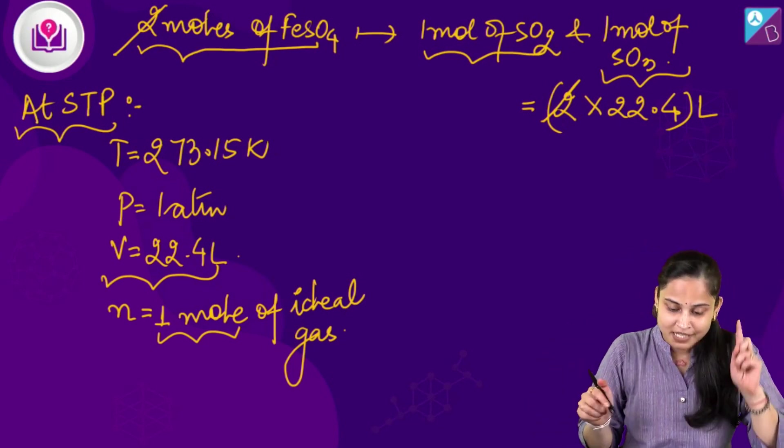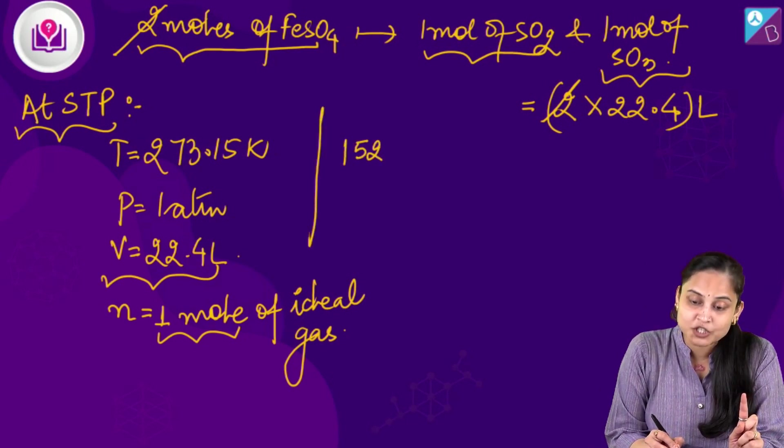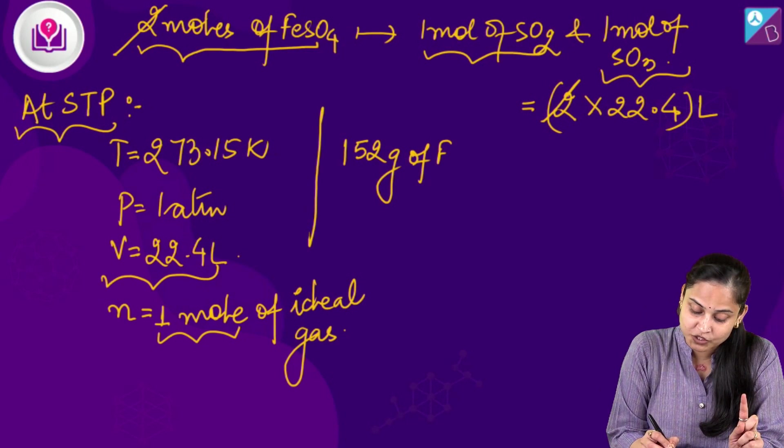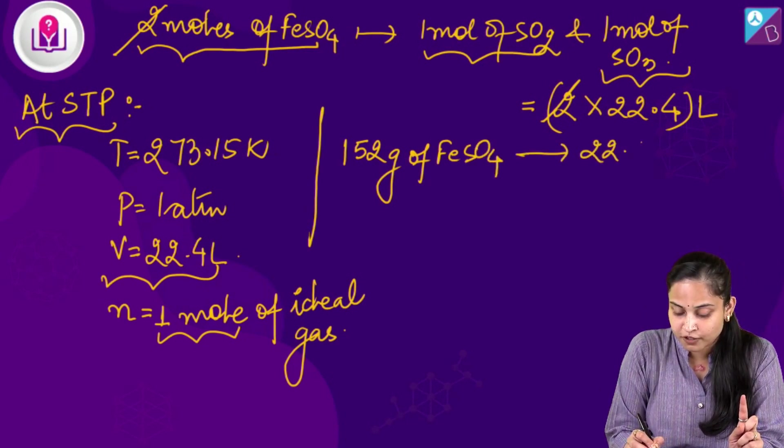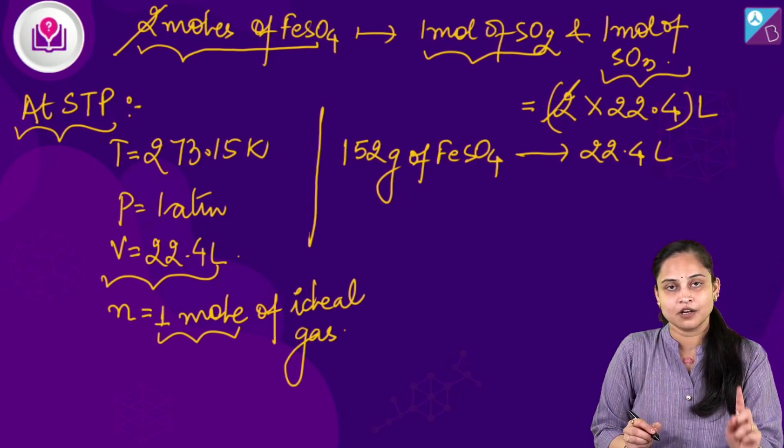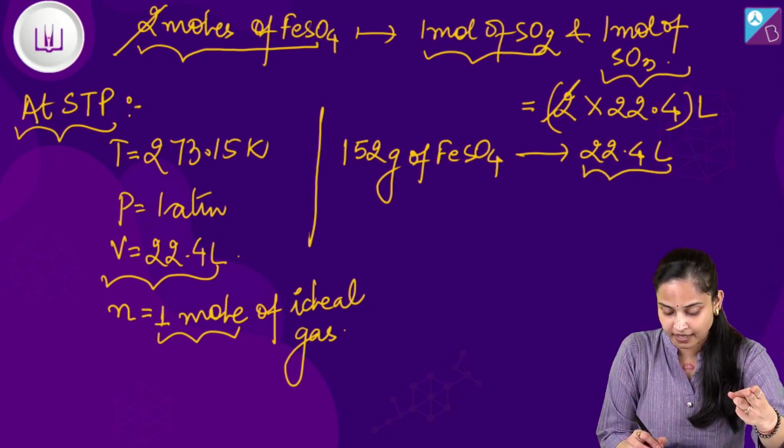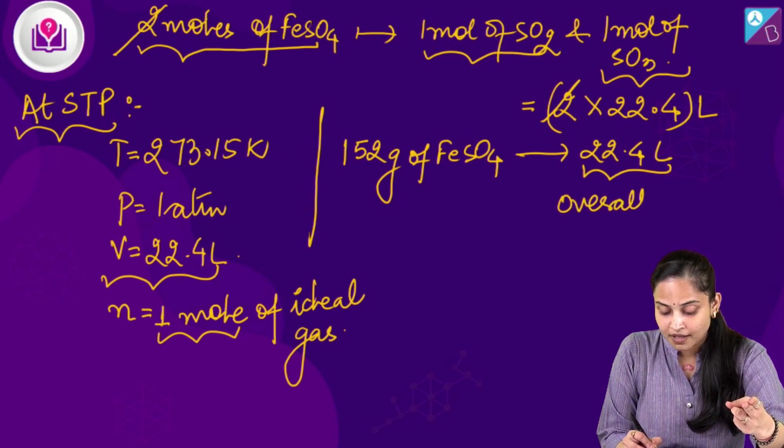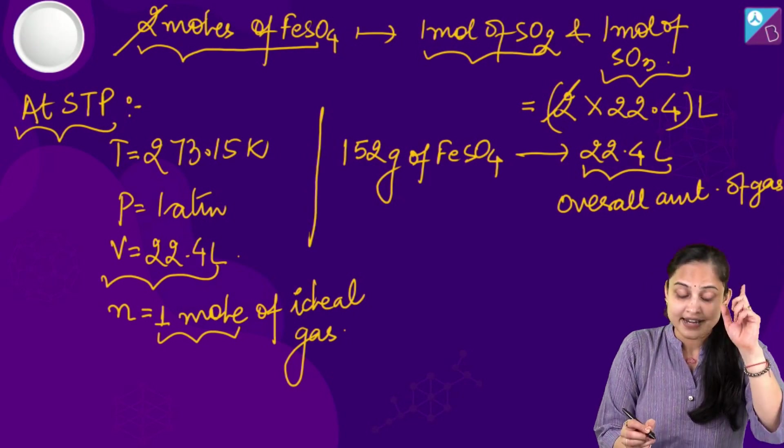Now, 1 mole of FeSO₄ means we are talking about 152 grams of FeSO₄. It gives us 22.4 litres of the gas. This 22.4 litres is the overall amount of gas.